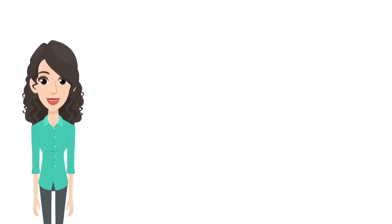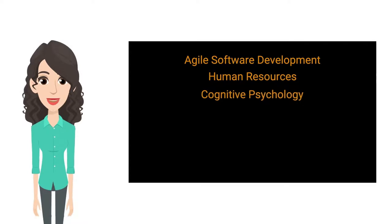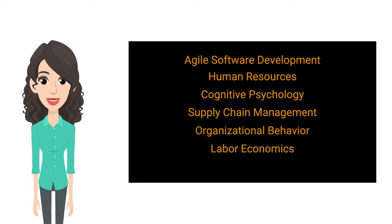In his unique style, Simon adeptly fuses critical research and concepts from a slew of diverse and seemingly unrelated fields, including Agile Software Development, Human Resources, Cognitive Psychology, Supply Chain Management, Organizational Behavior, and Labor Economics.